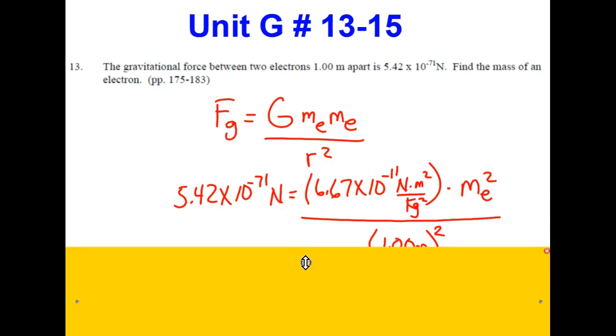When we go to substitute here, we have the force between them, very small, 5.42 times 10 to the negative 71 newtons equals Newton's universal gravitational constant, 6.67 times 10 to the negative 11 newton meters squared per kilogram squared times.